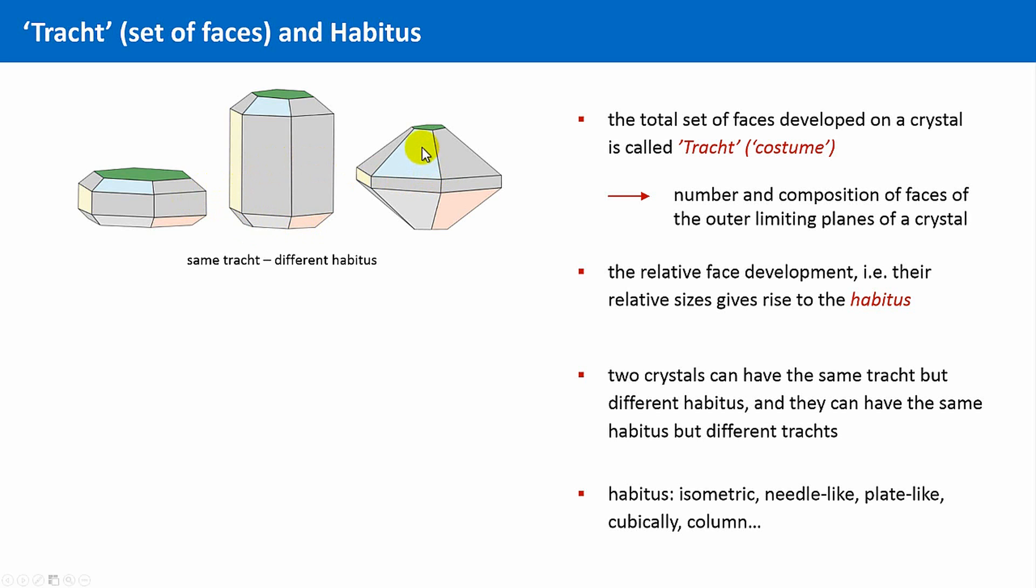And this can be seen, for instance, if you compare the size of this trapezoid with that trapezoid, or this very long rectangle with this very wide one. And this results in an overall different habitus. This shape here on the left could be described as plate-like, this in the middle as column-like, and this on the right as almost isometric.